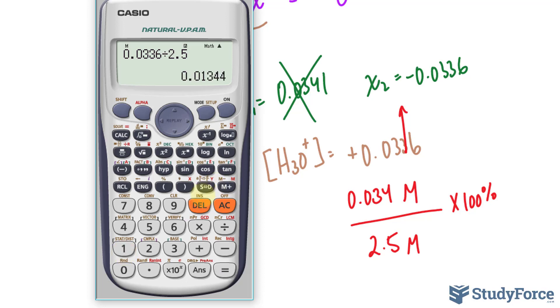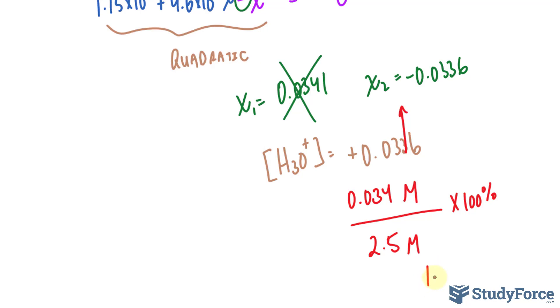That gives me 0.013 times 100%. Now, to two significant figures, that is 1.3% ionization.